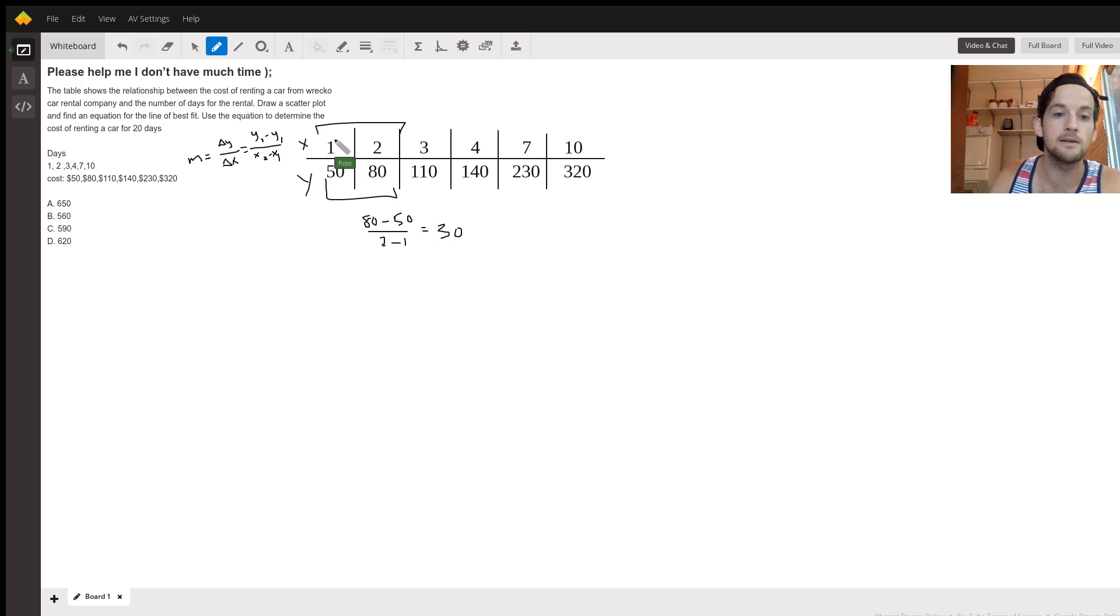What that means is over the course of that day, adding one more day, you would have to pay $30 more. So $30 for each day. Now, before we just assume that's going to stay the same, every single day is another $30, we should check to see if that continues.